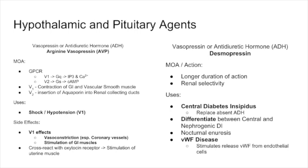Now we talk about vasopressin or ADH — antidiuretic hormone. The analog drug is arginine vasopressin, which can act on the vasopressin 1 or vasopressin 2 receptor. Vasopressin 1 is GQ-mediated (IP3/calcium) and vasopressin 2 is GS-mediated (cyclic AMP). For this test, V1 is primarily located in vascular smooth muscle — our vasculature — and V2 is the receptor in our renal collecting tubules that induces aquaporin. V2 is renal, V1 is vasculature.